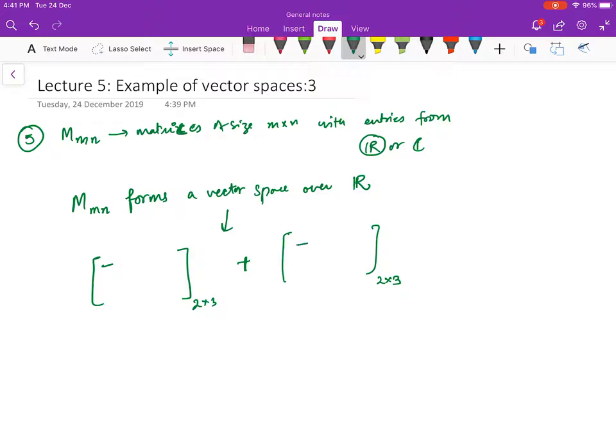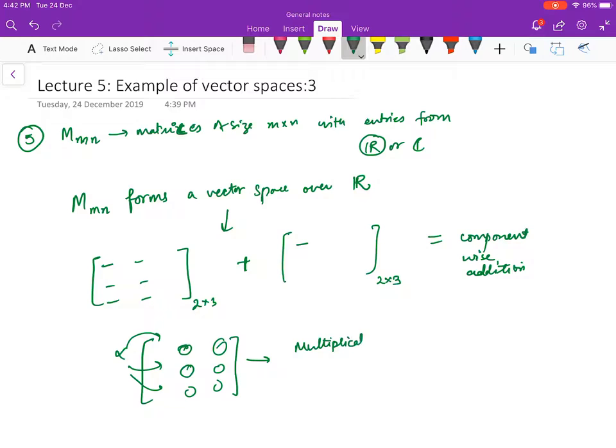Addition is simple matrix addition - you add component-wise. Scalar multiplication is defined as alpha times the matrix, where each entry is multiplied by alpha. This is the normal multiplication of a matrix with a scalar.